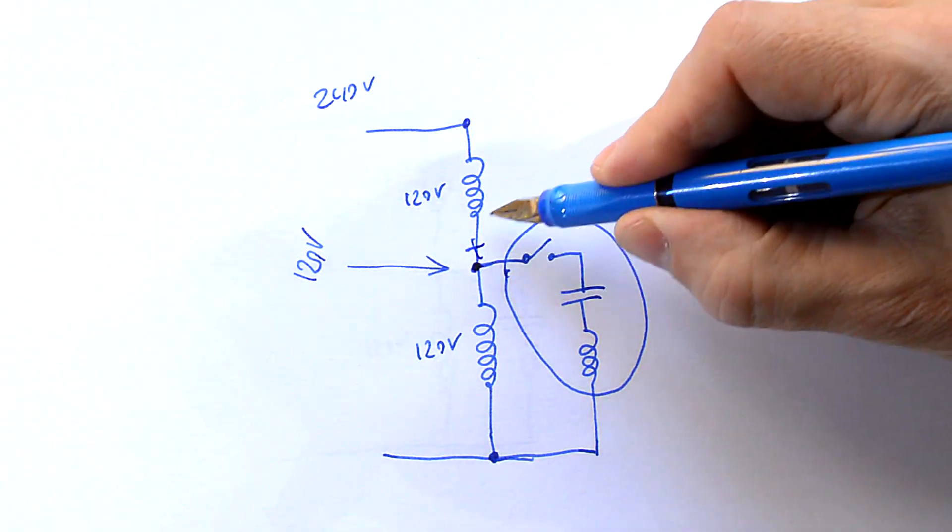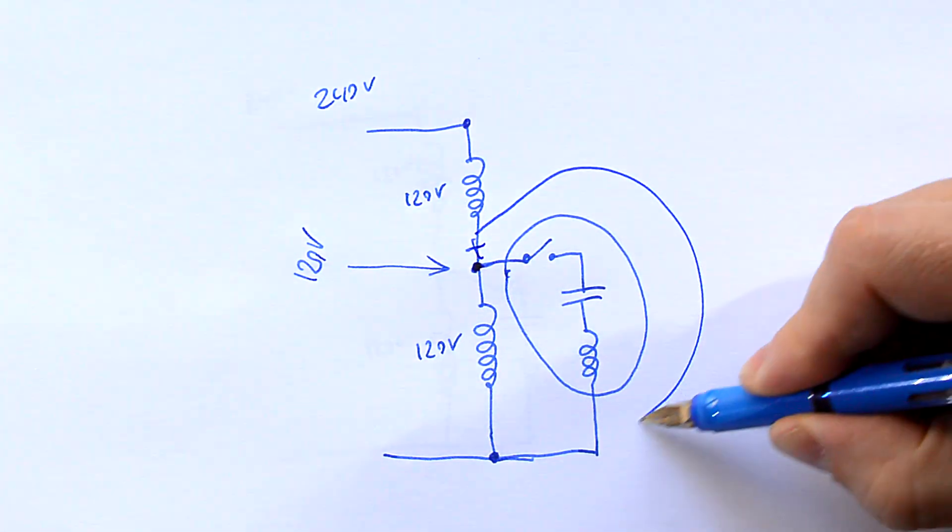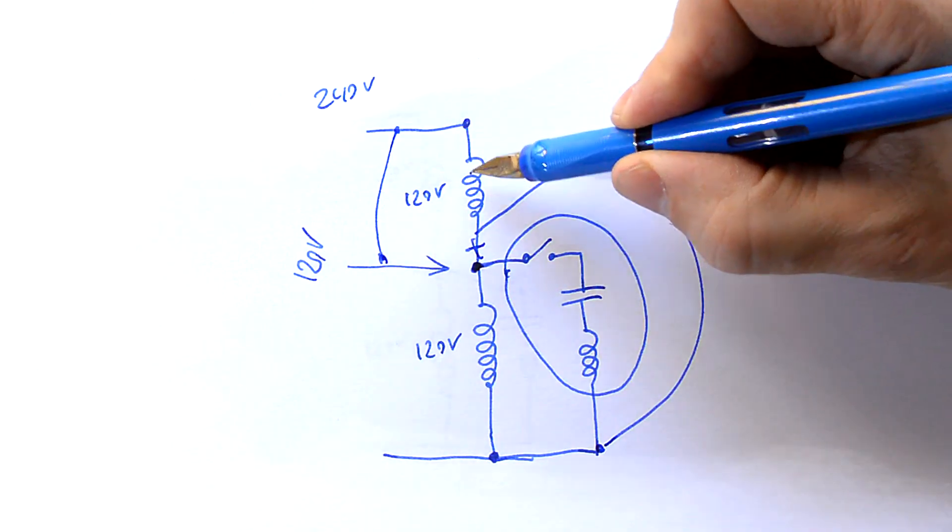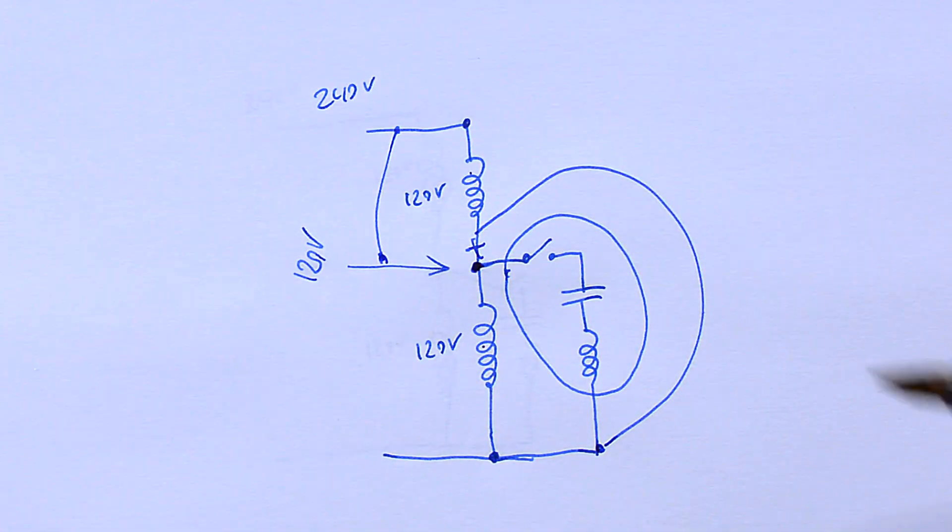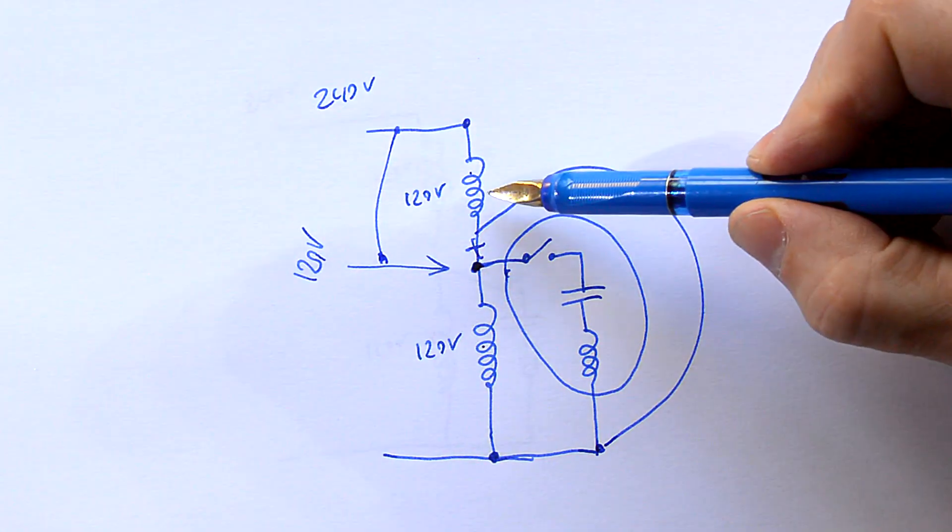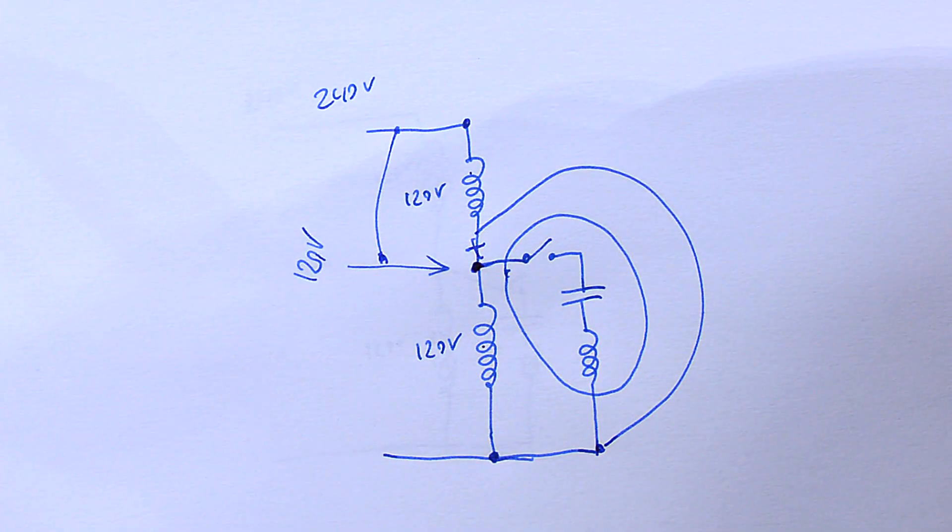And then we need to open this up here and connect that down here and this connects to here which puts these two windings in parallel. What's very important is we must not reverse this winding because if we do we're gonna blow the breaker very quickly.